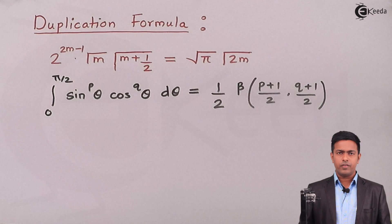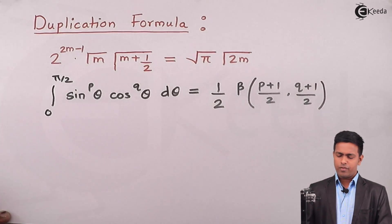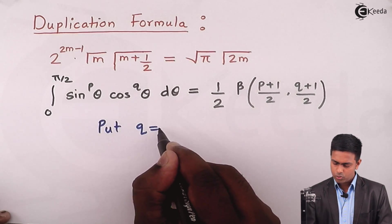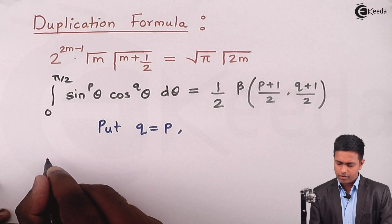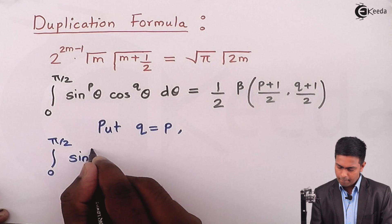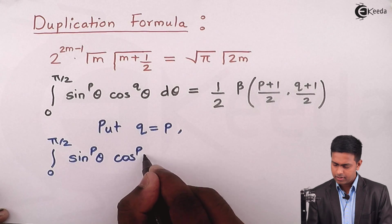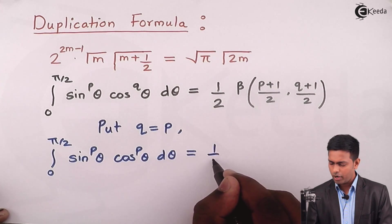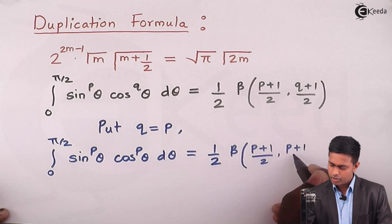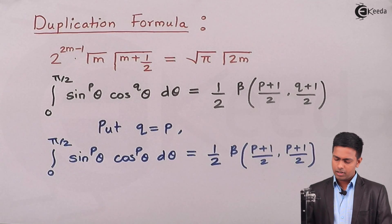From this definition we will derive the duplication formula. We substitute q equal to p. Doing this, the integral becomes integration from 0 to pi by 2 of sin raised to p theta times cos raised to p theta d theta, equal to 1 by 2 times beta of (p plus 1)/2 comma (p plus 1)/2. Now we solve both sides to get the duplication formula.